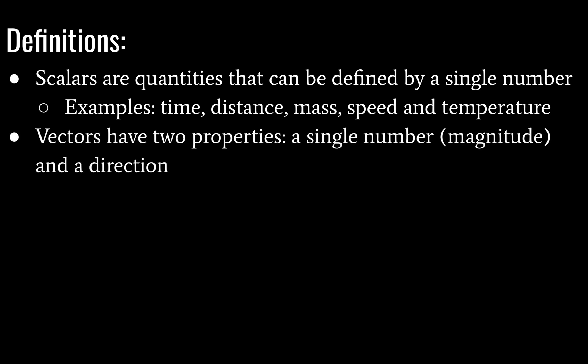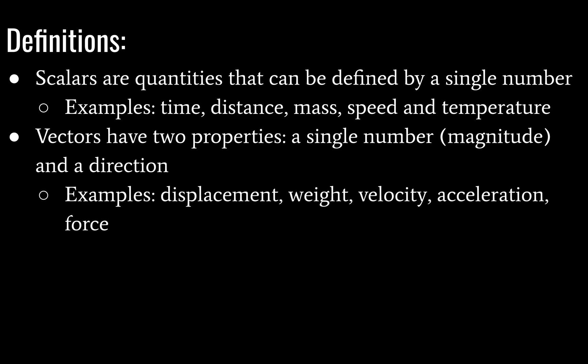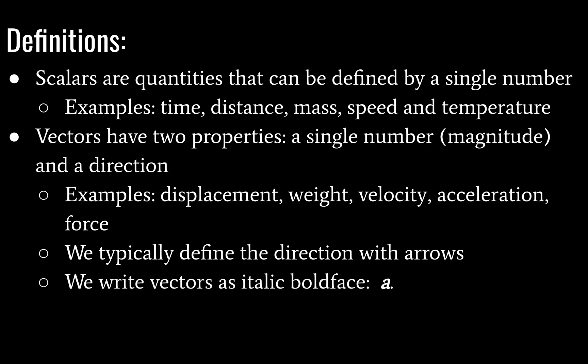Vectors, however, have two properties: a single number which we call magnitude, and a direction. So they have a quantity and we know which direction they are pointed in. Some examples of this include displacement, weight, velocity, acceleration, and force. And we typically show the direction with arrows. We can also give an angle. So we're going to write vectors with an italic bold face in this presentation. But there are some other ways to do it. Also, the magnitude is written as the absolute value of that a or just an italic a. You could also write a with a little arrow over the top.